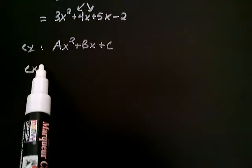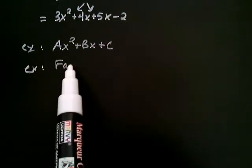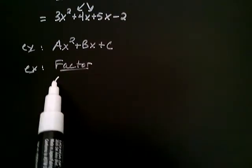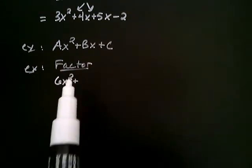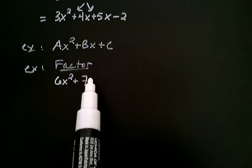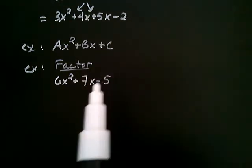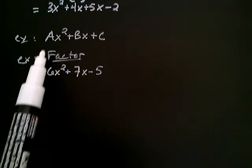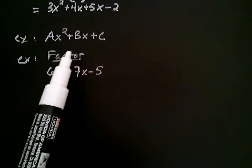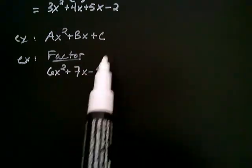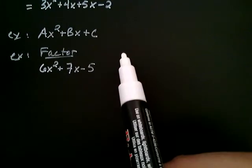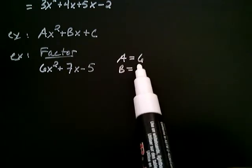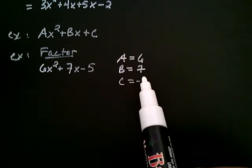Let's go ahead and illustrate the AC method. Let's go ahead and factor. How about we have 6x² + 7x - 5. So the first thing we're going to do is identify our A, B, and our C. I can see by comparison that the A is 6, the B is 7, and the C is negative 5. Let's write that off to the side here. That A is equal to 6, B is equal to 7, and C is equal to negative 5.